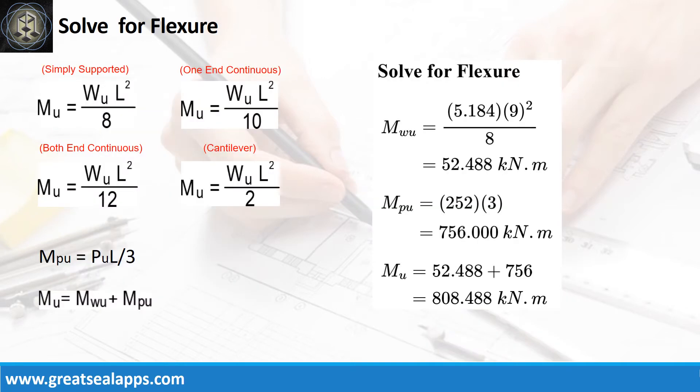Given factored uniform load equals 5.184 kN per meter, factored concentrated load equals 252 kN, and L equals 9 meters, the maximum moment from uniform load is 52.488 kN-m. And the maximum moment from concentrated load is 756 kN-m, for a total maximum design moment of 808.488 kN-m.